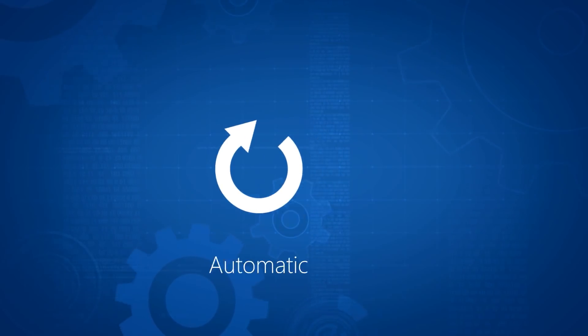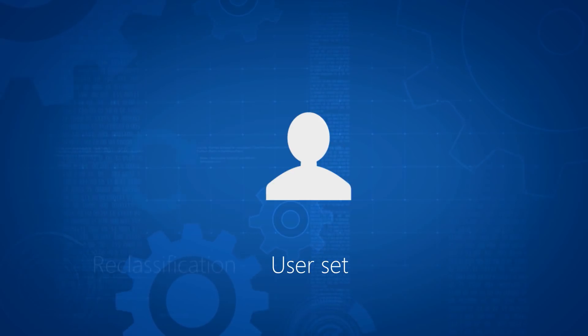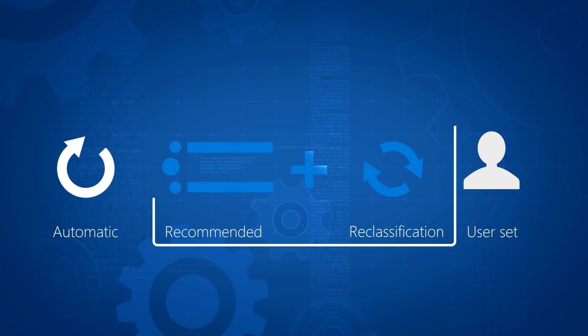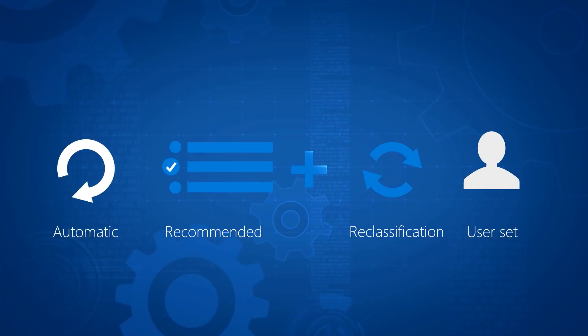On the other extreme, you've got user set policy, where you expect your users to classify everything manually. Don't hold your breath for that turning out perfectly. Really, where there's magic is in the middle. The combination of recommended and reclassification really can do wonders. This is where you pick a default — or a couple of defaults if you're using the scope policies capability — and from there let the user change or reclassify things. Add a little bit of automation in the form of a recommendation and now you hit the sweet spot.